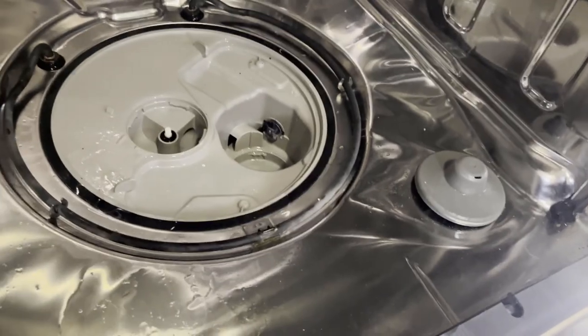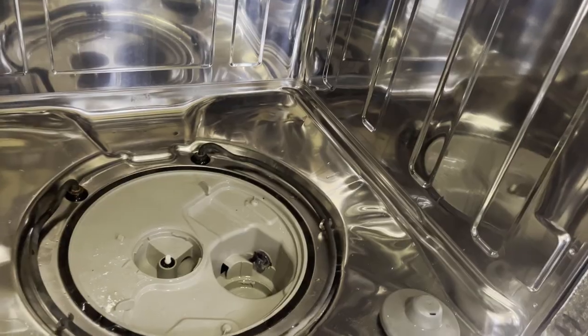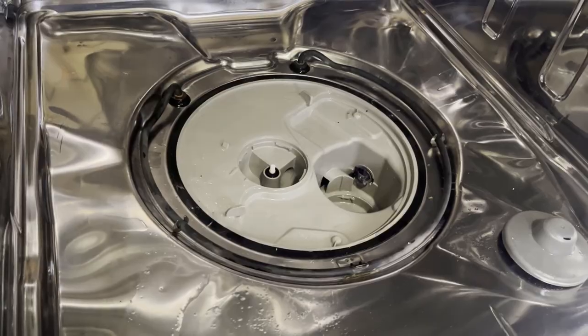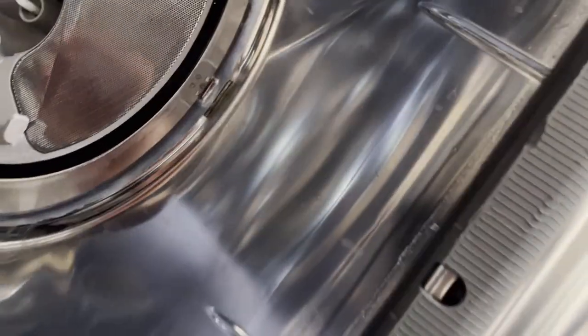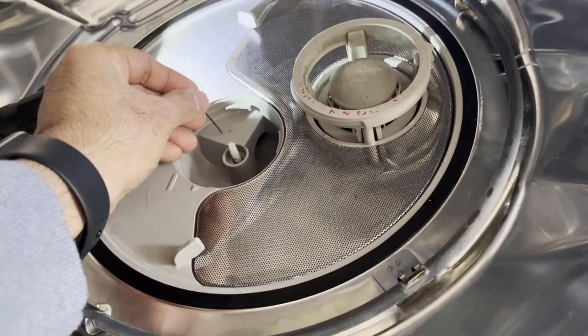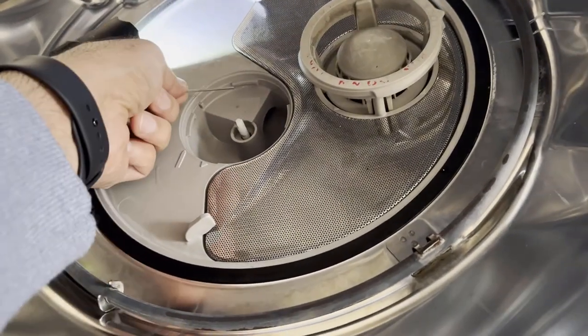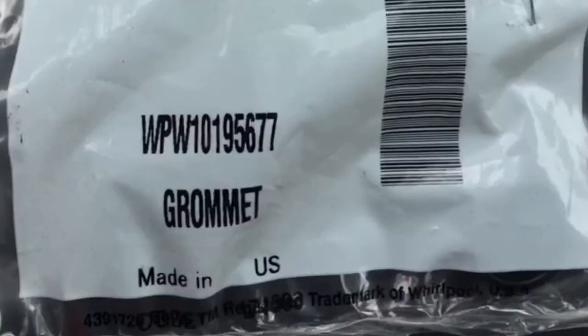The black grommet is the part that we need to replace. To remove the old grommet, a thin screwdriver or an Allen key might be useful. I used the smallest Allen key I had to kind of pop it up like that. The part number for the grommet I ordered is WPW10195677.